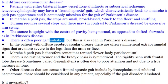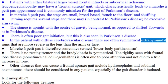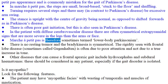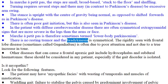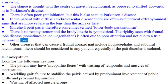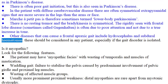There is often poor gait initiation, but this is also seen in Parkinson's disease. In the patient with diffuse cerebrovascular disease there are often symmetrical extrapyramidal signs that are more severe in the legs than the arms or face. Marche-à-petit-pas is therefore sometimes termed lower-body Parkinsonism. There is no resting tremor and the bradykinesia is symmetrical. The rigidity seen with frontal lobe disease, sometimes called Gegenhalten, is often due to poor attention and not due to a true increase in tone. Other diseases that can cause a frontal apraxic gait include hydrocephalus and subdural hematomas, which should be considered in any patient, especially if the gait disorder is isolated.